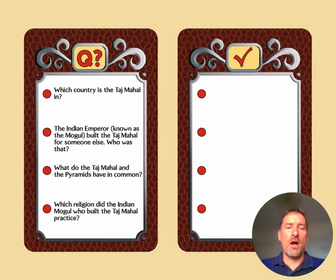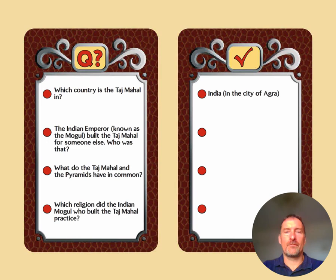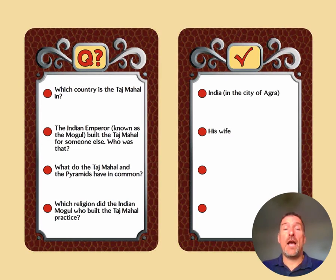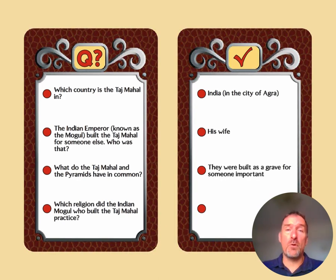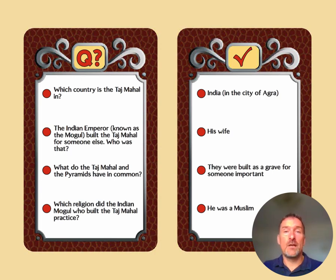Here are four questions about the Taj Mahal. Which country is the Taj Mahal in? India, in the city of Agra. The Indian emperor built the Taj Mahal for someone else — who? For his wife, whom he loved very much. What do the Taj Mahal and the pyramids have in common? They were both built as graves for someone important — the Taj Mahal as a grave for his wife, representing his love for her. Which religion did the Mughal emperor who built the Taj Mahal practice? He was a Muslim.